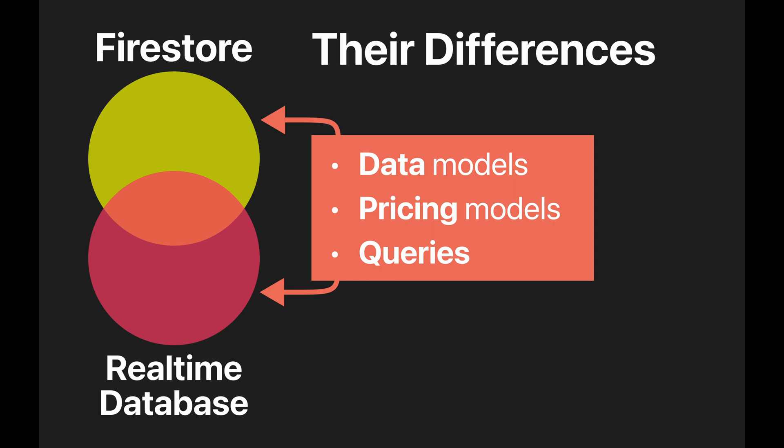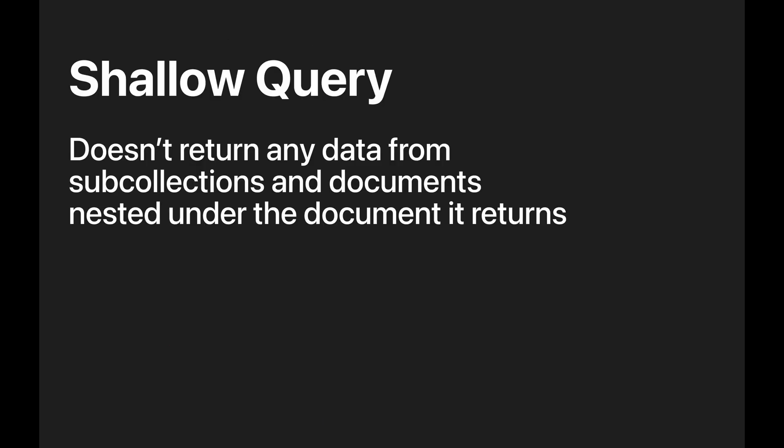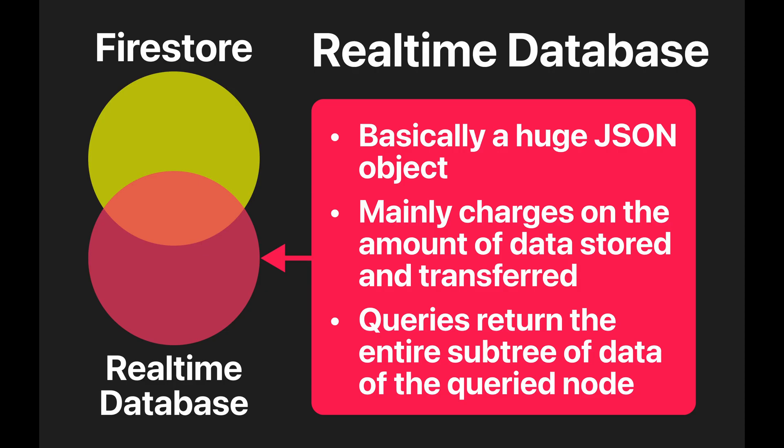Another major difference is querying. Cloud Firestore's queries are shallow, meaning they don't return any data from sub-collections and documents nested under the document it returns. While the real-time database returns the whole subtree of data under a specific node you queried.